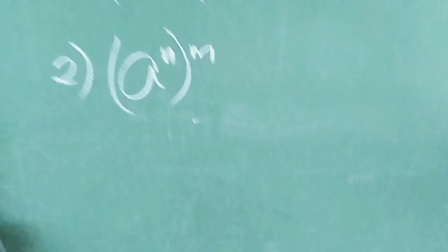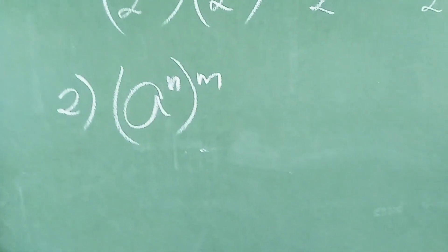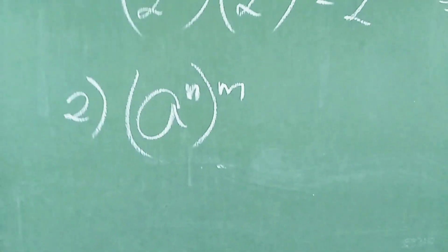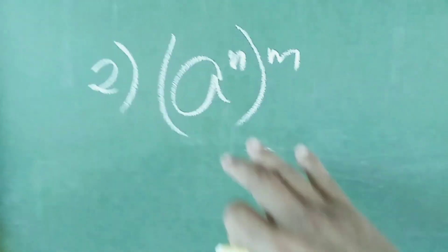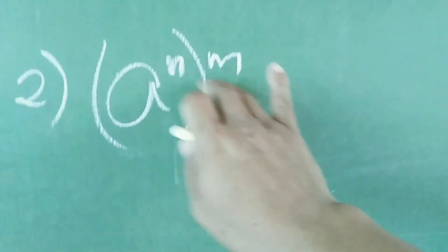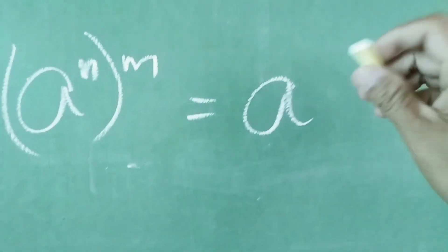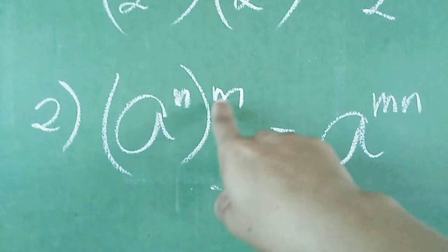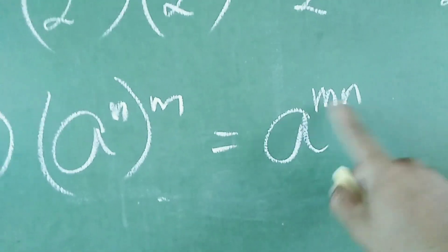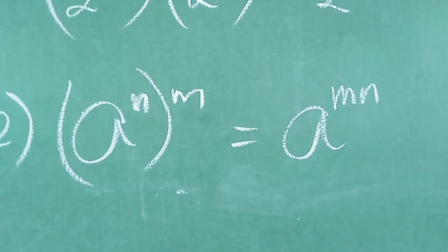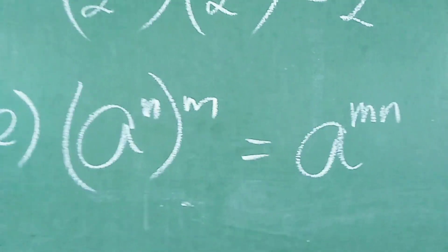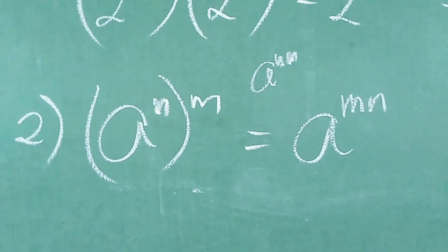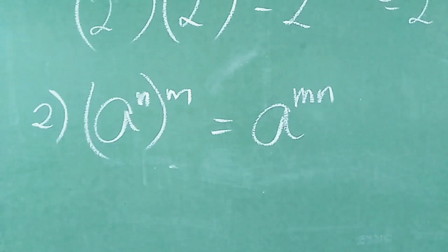Next naman po natin is yung number 2 — another one of the Laws of Exponent. Hindi ko nasasabihin kung ano yung term niya kasi may mga ibang book na magkakaiba-iba po ang kanilang mga term. Yung process niya ang i-discuss ko po sa inyo. So we have A raised to N, quantity raised to M. Ibig sabihin po nito, ipagmumultiply natin — copy the base, multiply the exponent: MN. So we have A raised to MN. It doesn't matter kung MN o NM, kasi sometimes ang pag-arrange po natin is ascending or alphabetical order. Walang problema dun — standard natin siya as A raised to MN.